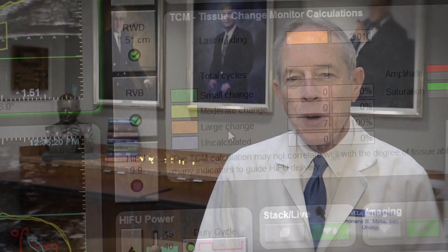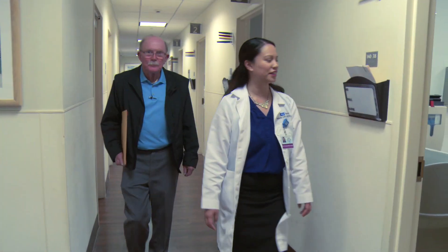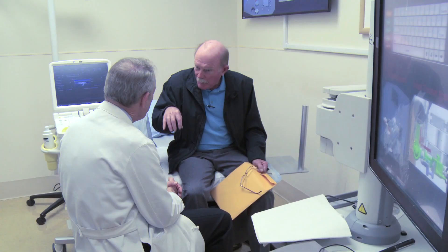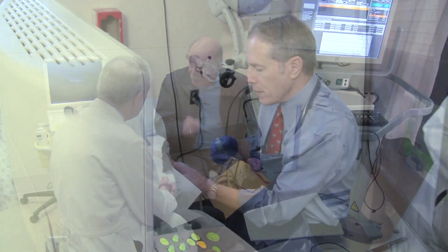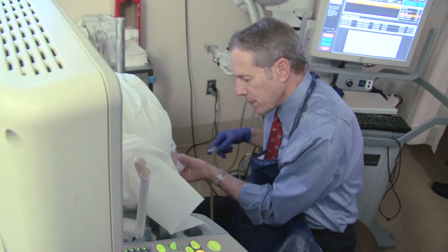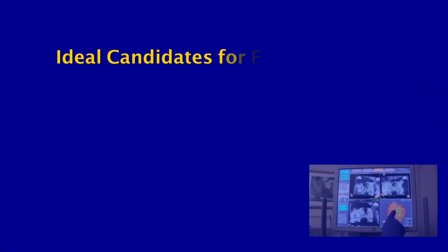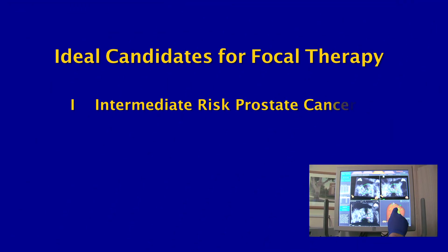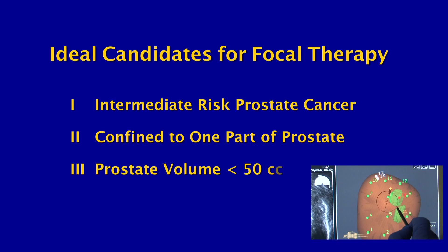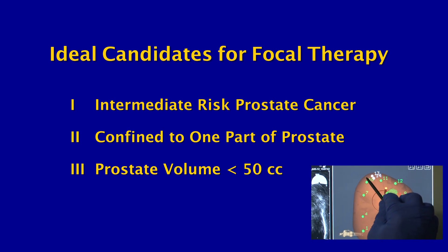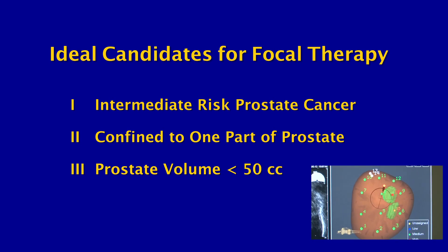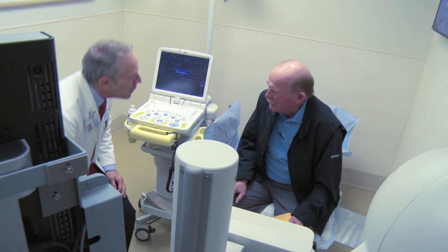Six months after a focal therapy treatment, we perform an MRI and a targeted biopsy of the ablation zone to check our results. At this point in time, we would like our focal therapy patients to be men with intermediate-risk prostate cancer, confined to one part of the prostate, and with a prostate volume of approximately 50 cc's or less. Using the guidelines that we have outlined in this video, we believe that focal therapy of prostate cancer is a very reasonable option for many men.